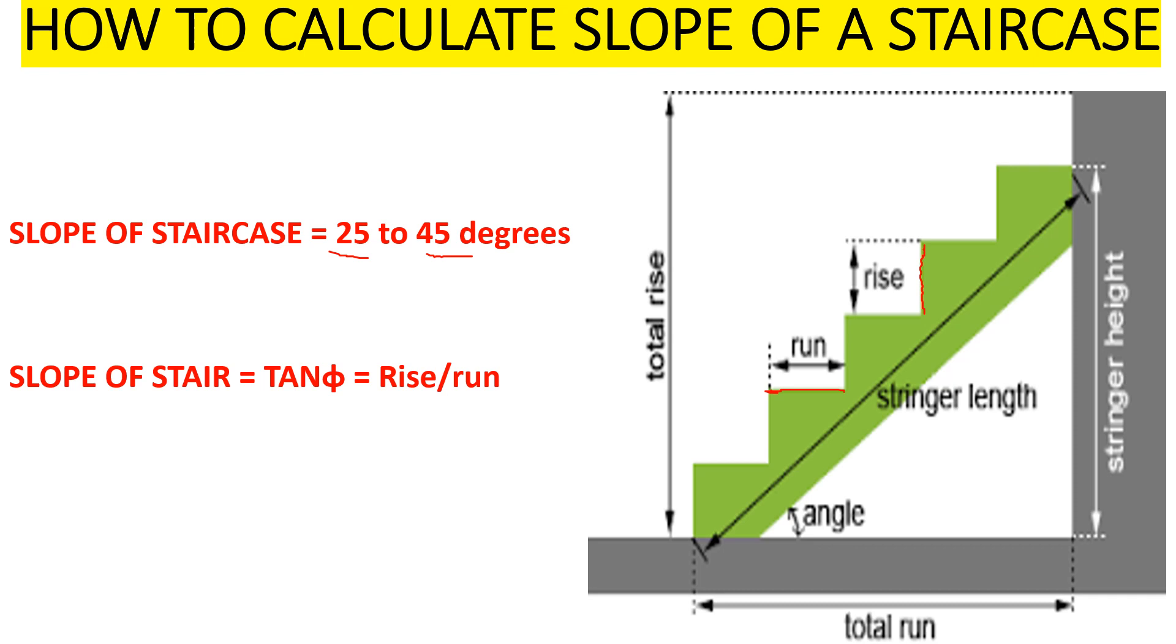If the staircase are uniform, if the dimension of the tread and the riser are uniform, you just need to measure one tread and one riser and then you can use them to calculate the slope.